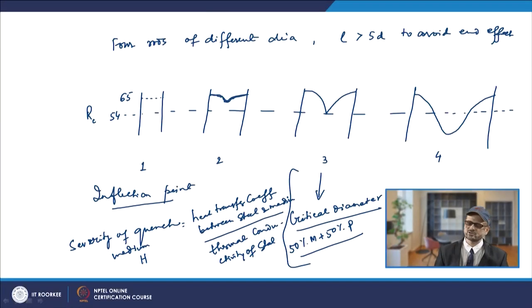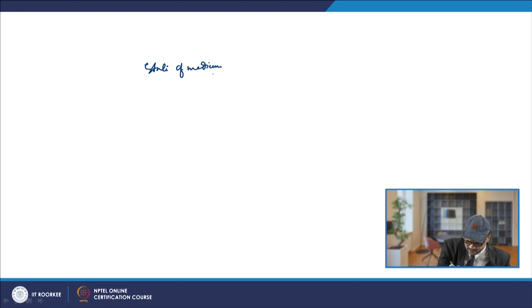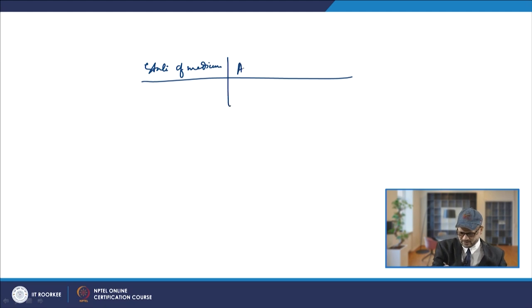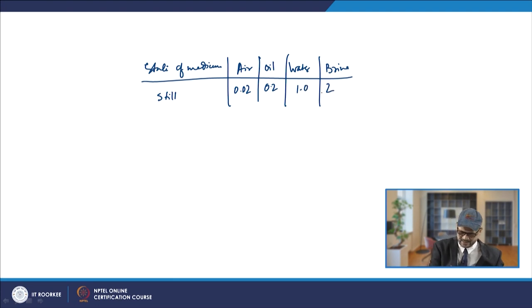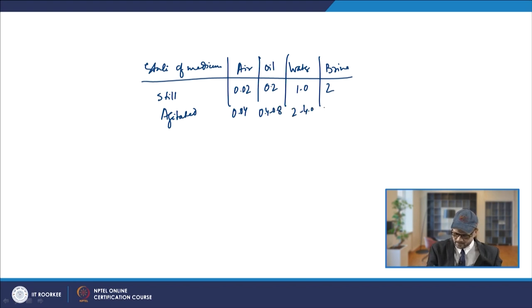The severity of the quenching medium is known as H, and H has different values for different media. For the state of medium — no agitation — air has H ≈ 0.02, oil ≈ 0.2, water ≈ 1, and brine ≈ 2. For agitated conditions, these values increase: air 0.04, oil 0.4 to 0.8, water 2 to 4, and brine 3 to 5. When we agitate the liquid, the value of H — the severity of the quenching medium — goes on increasing.